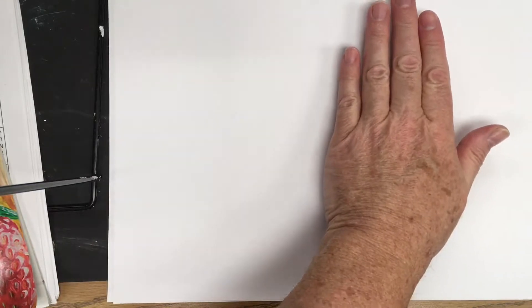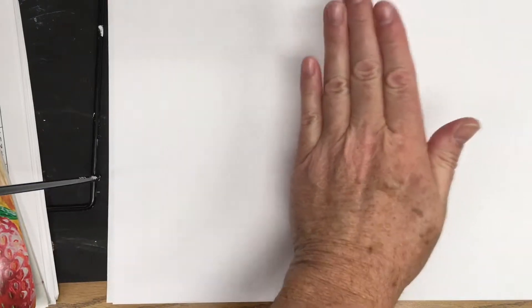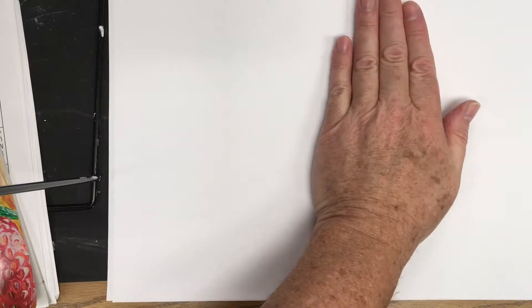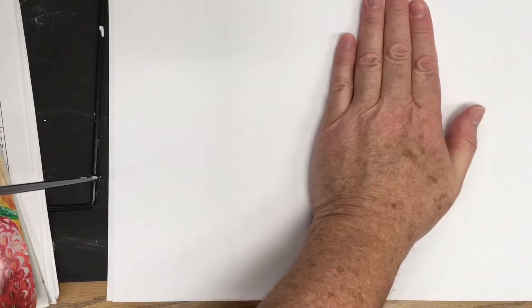Our first step to make this very simple turkey is to find the center of our page. I'm going to put my hand in the center of the page. You can use a pencil for this process or a paintbrush.